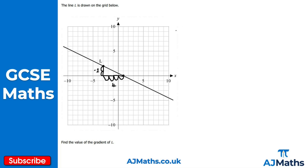So the gradient m equals delta y divided by delta x. The change in y here is negative two — we've gone down two units — so we get minus two divided by the change in x, which is positive four. That gives us minus two over four, and simplifying by dividing top and bottom by two gives us minus a half. So the gradient of L is equal to minus a half — meaning for every one unit we go along, we go down half a unit.